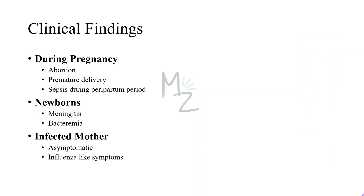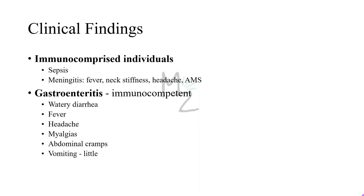Clinical findings. Infection during pregnancy can cause abortion, premature delivery, or sepsis during the peripartum period. Newborns infected at the time of delivery can have acute meningitis one to four weeks later; bacteria reach the meninges via the bloodstream, so there will be bacteremia. The infected mother is either asymptomatic or has an influenza-like illness. Listeria monocytogenes infections in immunocompromised adults can be either sepsis or meningitis, with symptoms like fever, neck stiffness, headache, and altered mental status. In immunocompetent patients, gastroenteritis can occur, characterized by watery diarrhea, fever, headache, myalgias, abdominal cramps, but little vomiting.